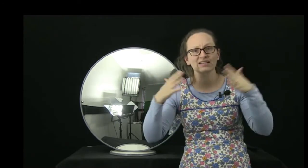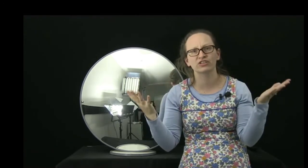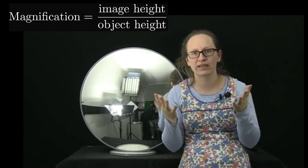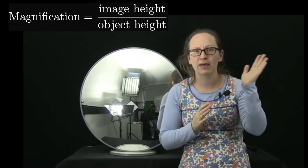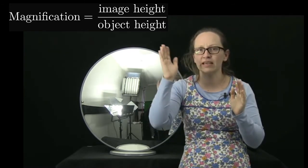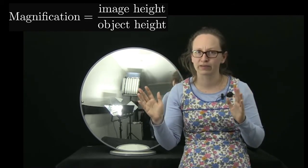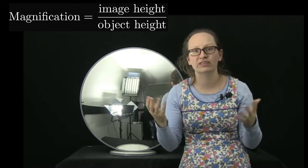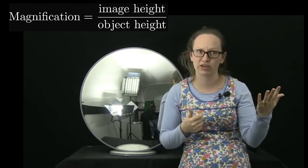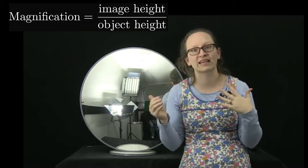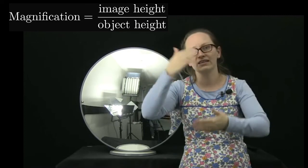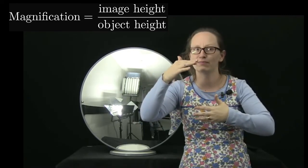Mirrors can cause an object to be magnified. So magnification is a change in the apparent size of the object. So magnification can be calculated using the formula. Magnification is equal to the image height over the object height. Now, one trick is that if the image is inverted, that is, if the image is upside down compared to the object, we actually have to put a negative sign in front of it. So the negative sign in the magnification indicates that the image has been flipped upside down.